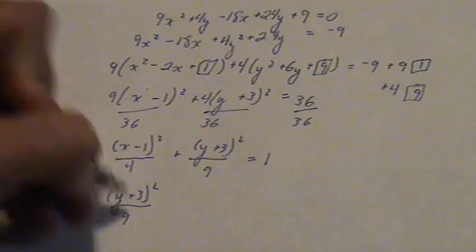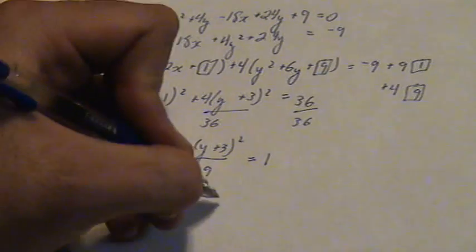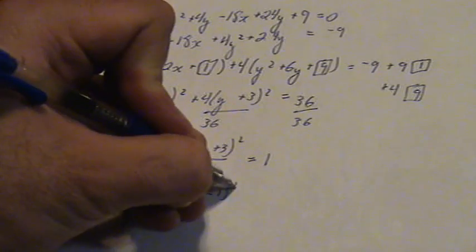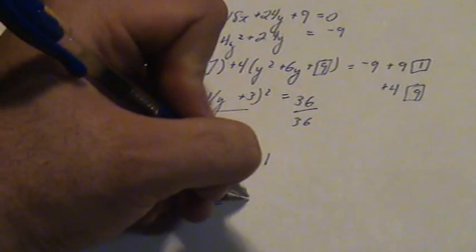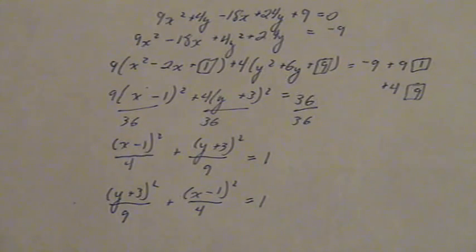y plus 3 squared over 9 plus x minus 1 squared over 4 equals 1. Now that we have it set up this way, we can easily tell that this ellipse is going to be vertical as we set this up.